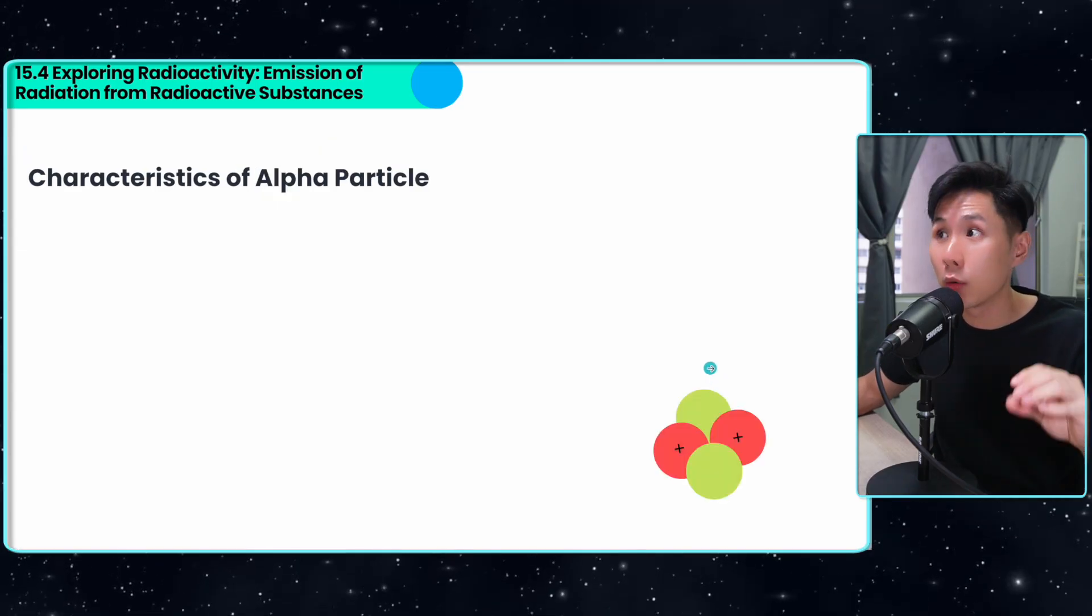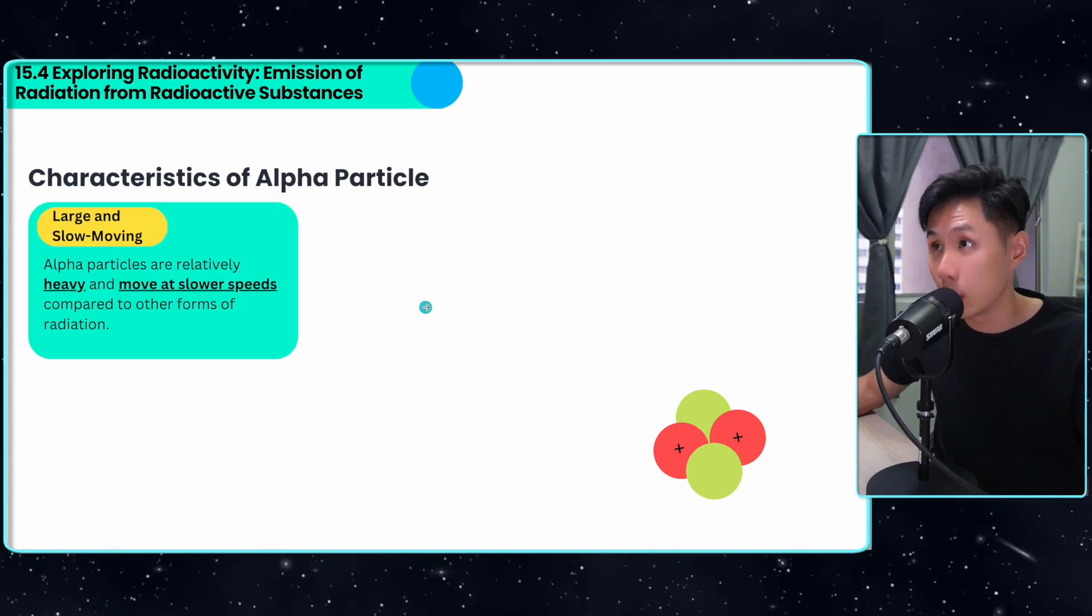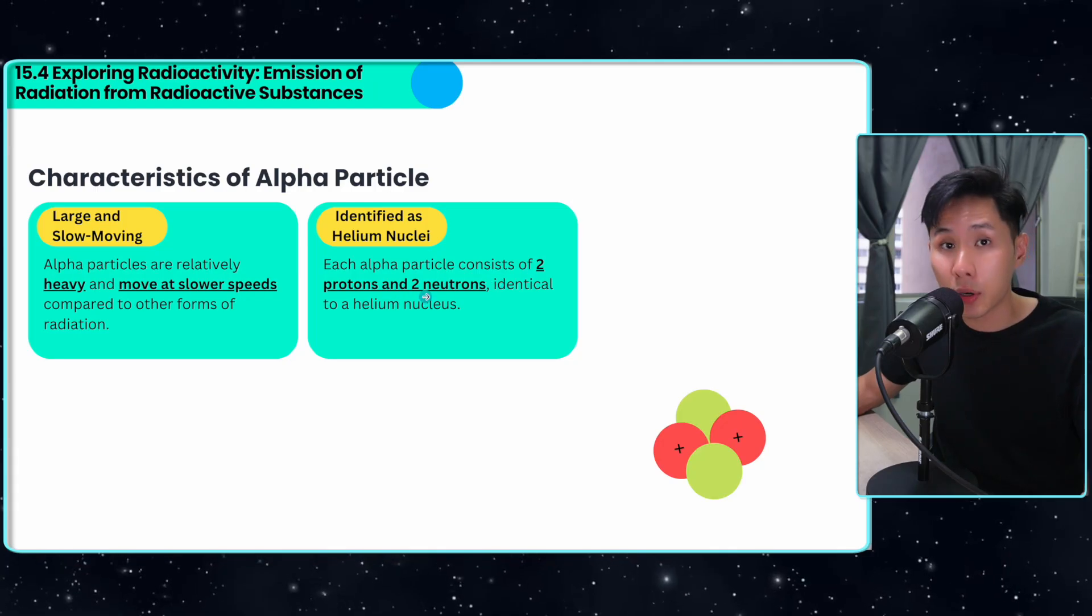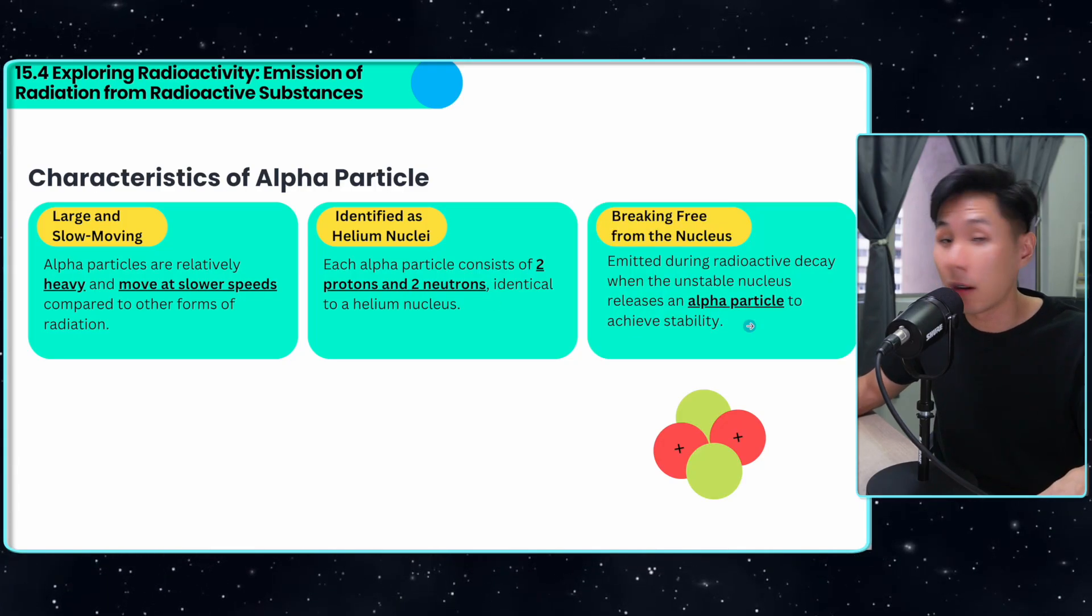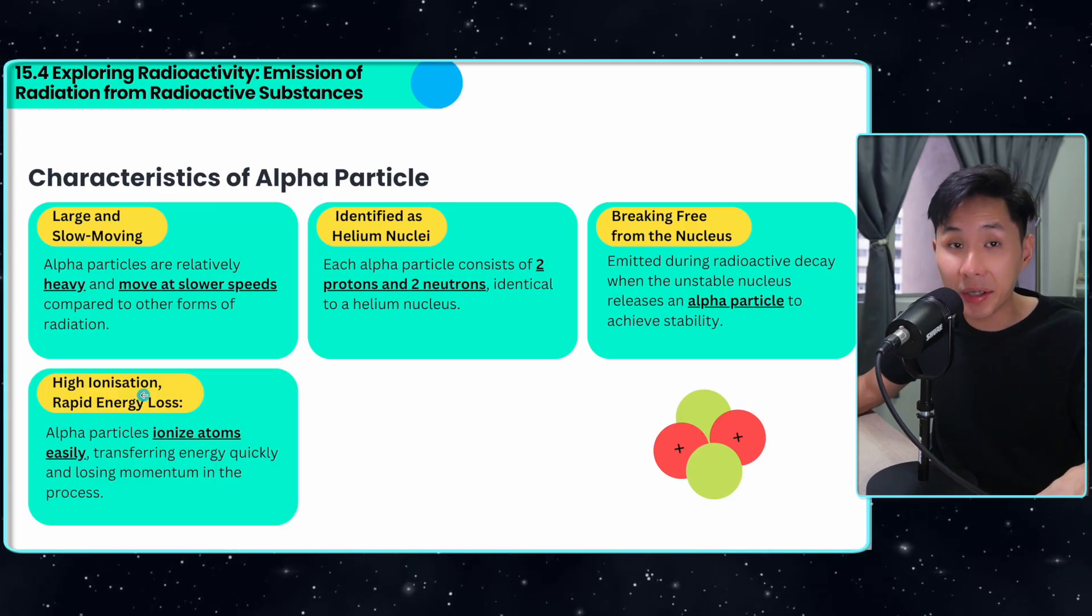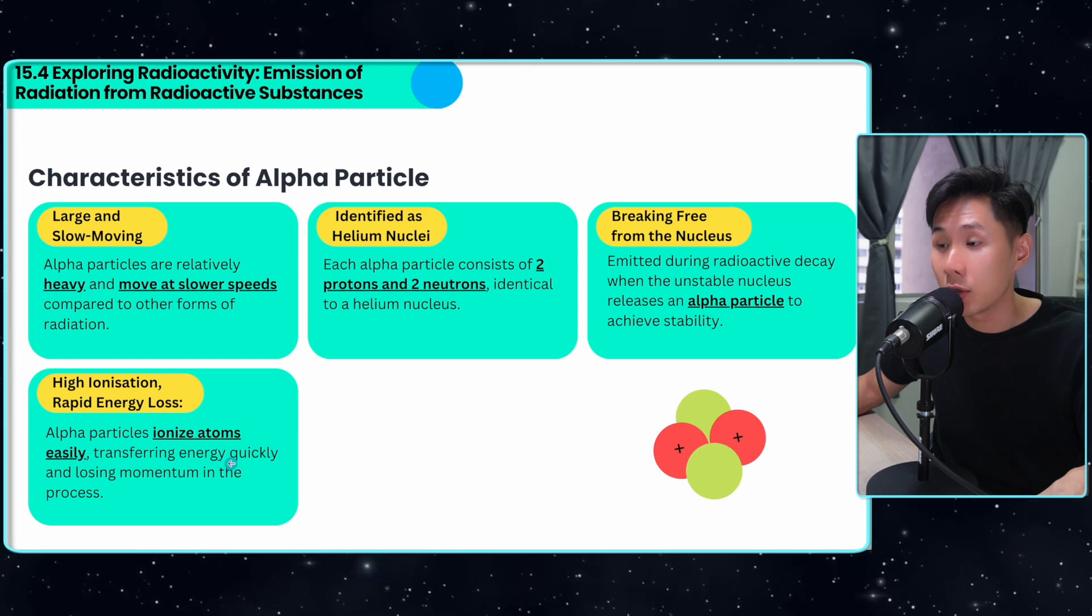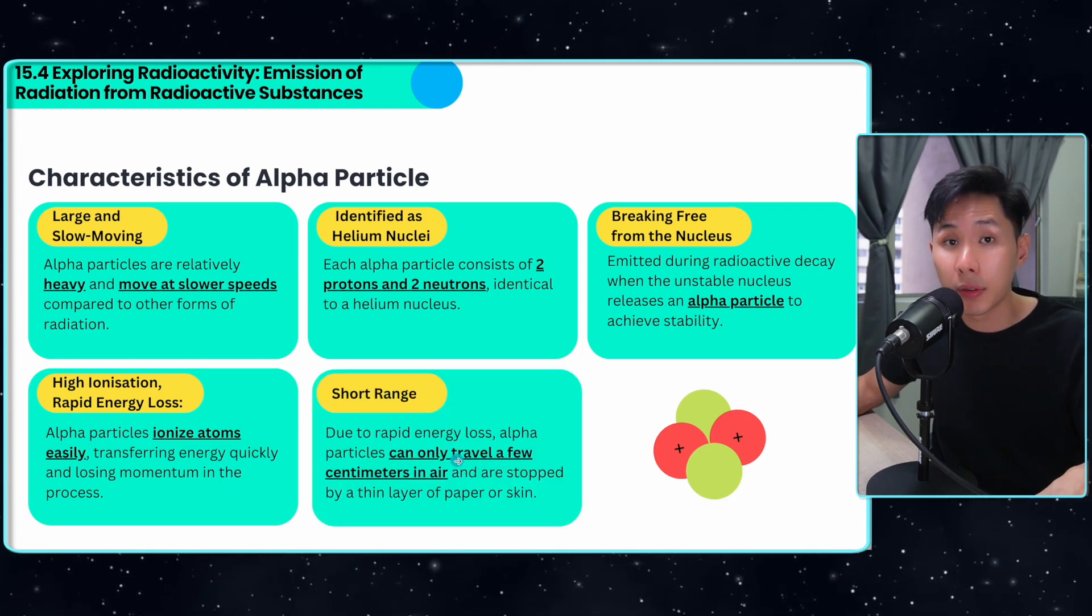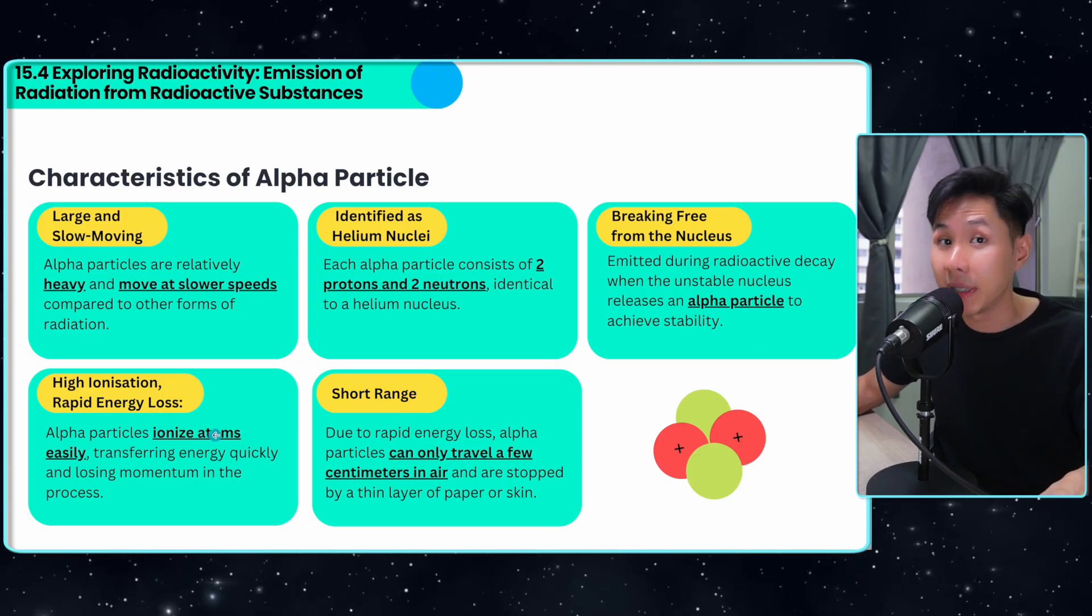Let's dive deep into the characteristics of alpha particles. First of all, they are heavy, so they move at a slower speed. They are made out of two protons and two neutrons, and they are released when an unstable nucleus releases an alpha particle. High ionization: they can ionize atoms really easily, transferring energy and losing momentum. Short range: they can only travel a few centimeters in air because they are absorbed by atoms easily.